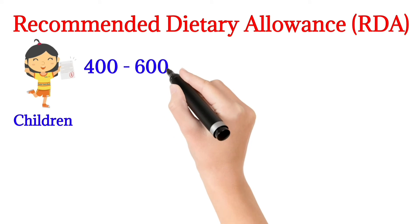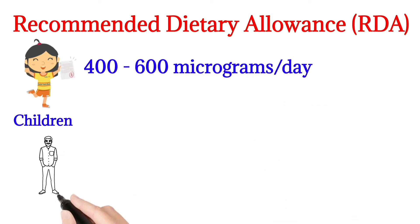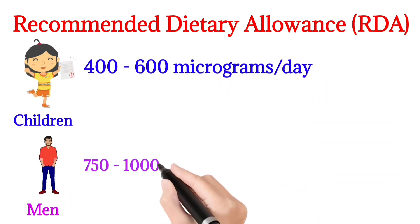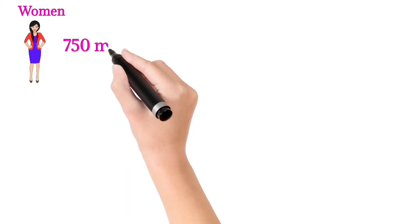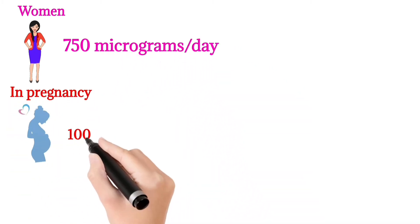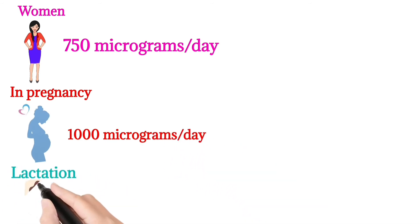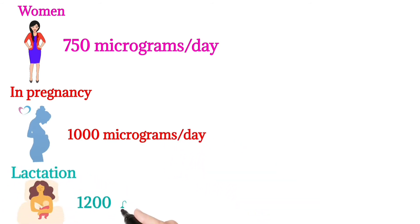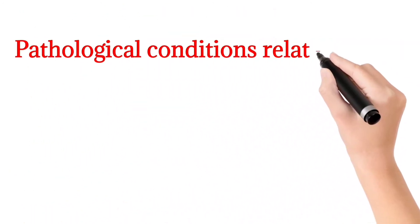Recommended dietary allowance: in children, 400 to 600 micrograms per day; in men, 750 to 1000 micrograms per day; in women, 750 micrograms per day; in pregnant ladies, 1000 micrograms per day; and during lactation, 1200 micrograms per day.